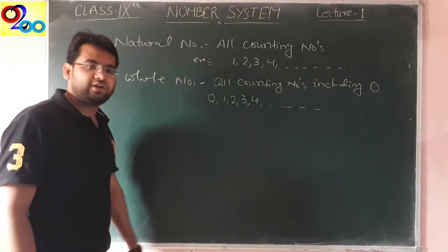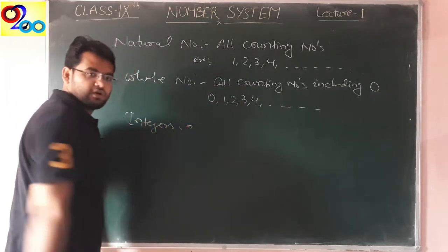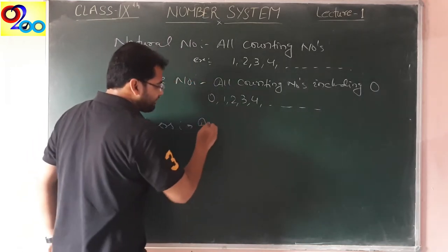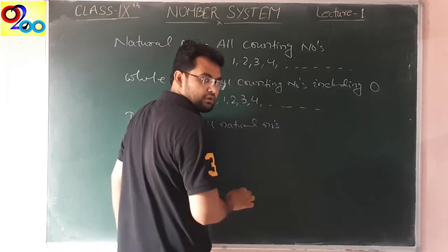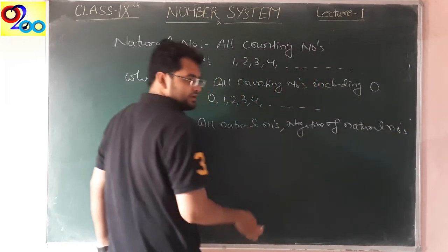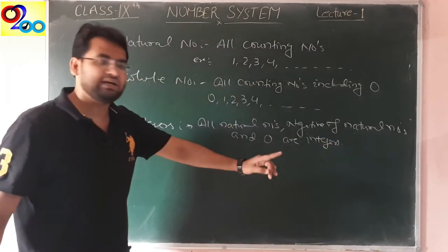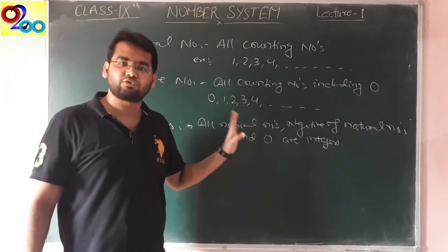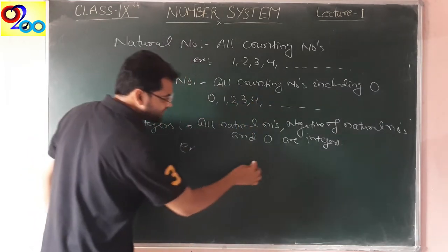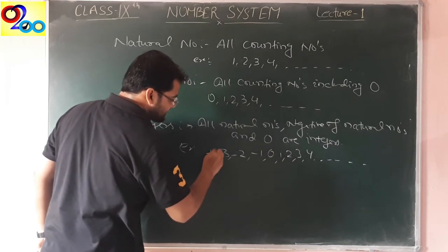Next is integer. What are integers? All natural numbers, the negative of natural numbers, and zero are integers. Natural numbers like 1, 2, 3, 4, 5, 6 and negatives: minus 1, minus 2, minus 3, minus 4, minus 5 going to infinity, and zero. When these three combine, it will be the integer. So: 0, 1, 2, 3, 4 going to infinity on the right side and minus 1, minus 2, minus 3, minus 4 going to minus infinity on the left side.